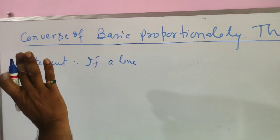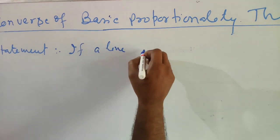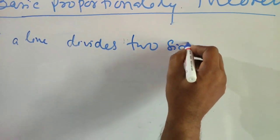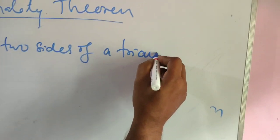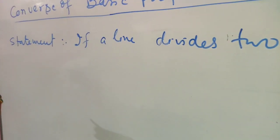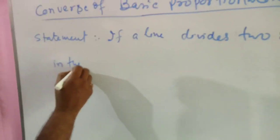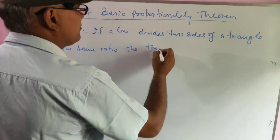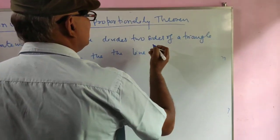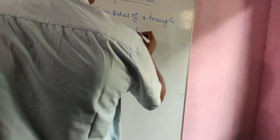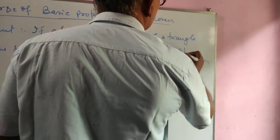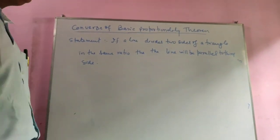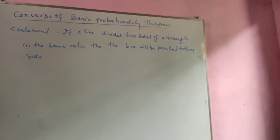What's up. Basic Proportionality Theorem — its statement is: if a line divides two sides of a triangle in the same ratio, then the line will be parallel to the third side.